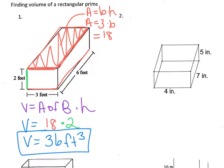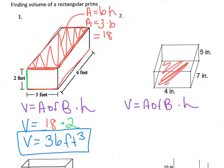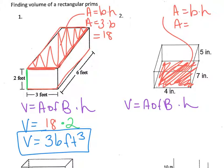That's how you find volume of a prism. Let's do another example. I have a rectangular prism again, so I'm going to write the formula: volume equals area of base times height. The first thing I'm going to do is color in the base. The base is a rectangle, so I have to find the area of a rectangle, which is base times height. In this rectangle, the base is 4 and the height is 7. So, 4 times 7 is 28 — the area of the base is 28.